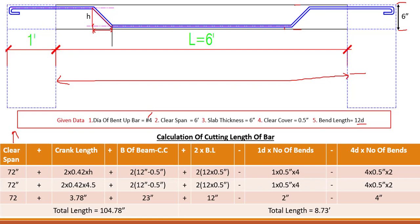From this position up till this position we have taken the dimension. The crank is from this position up till this position, and the crank length formula is 0.42 × H. This 0.42 is for a 45-degree angle — if the crank is at 45 degrees you use this formula, and in our case it is 45 degrees. Because we have two cranks, we take 2 × 0.42 × H.